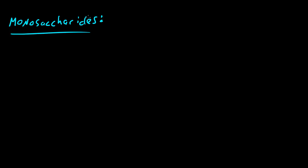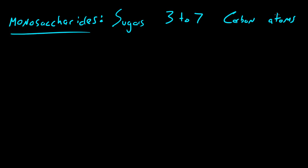Starting with monosaccharides. And I know my handwriting is pretty bad, but monosaccharides are a type of carbohydrate and they're actually sugars consisting of 3 to 7 carbon atoms. Now I know what you guys are thinking — you said they were carbohydrates, but now you're saying they're sugars? Believe it or not, sugars are a type of carbohydrate. Kind of weird, but we'll talk more about that later on.